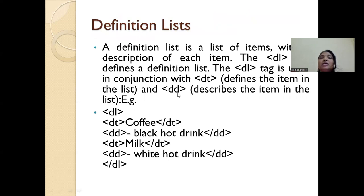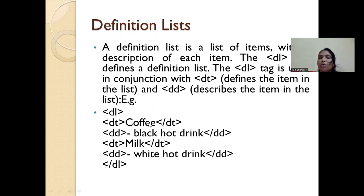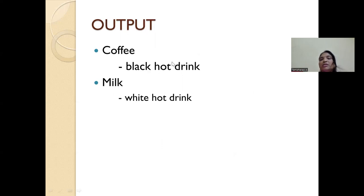The third type is definition list. You use a definition list when you want to list out some items with a description for each item. For defining the definition list, the tag used is DL, and for defining the item it is DT. In this example, it starts with the DL tag. Inside, you define items — coffee and milk are the two items taken — and give a description for each item using the data description tag. For coffee, the description is 'black hot drink', and for milk, 'white hot drink'. The output displays coffee followed by its description, and milk followed by its description.